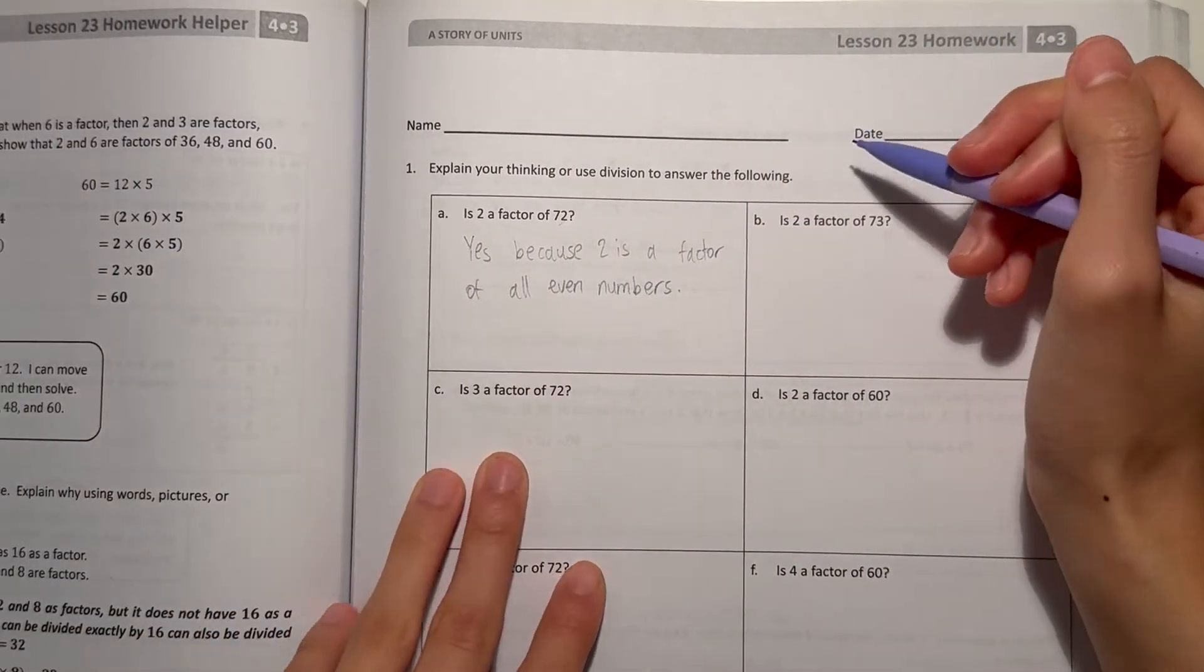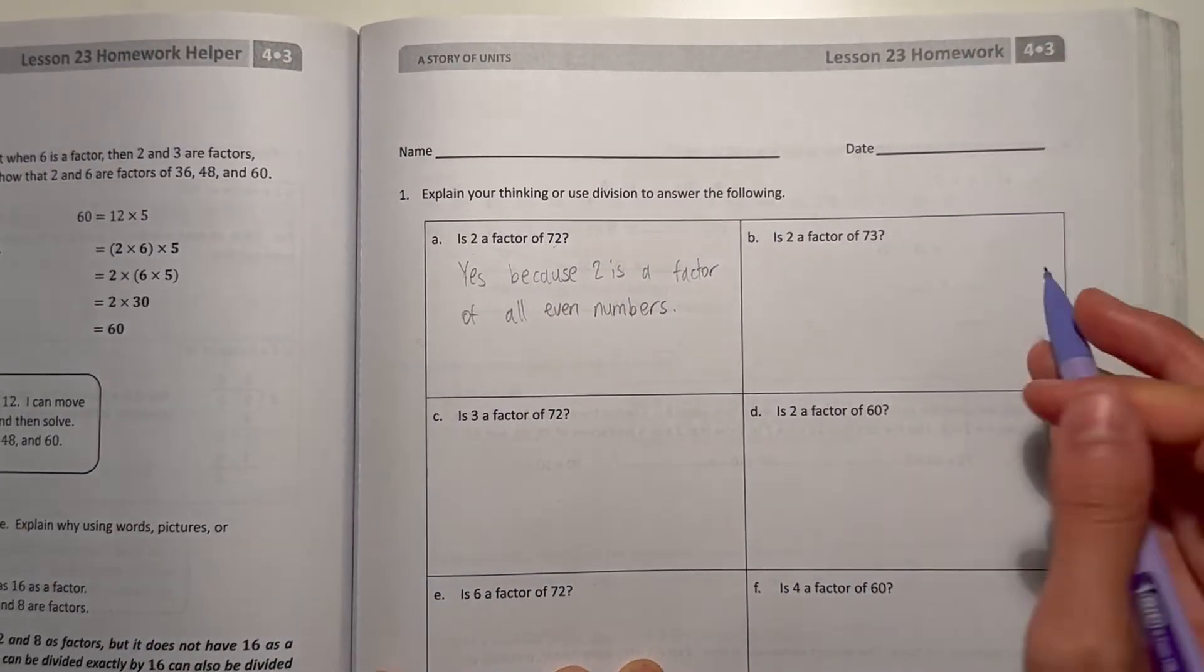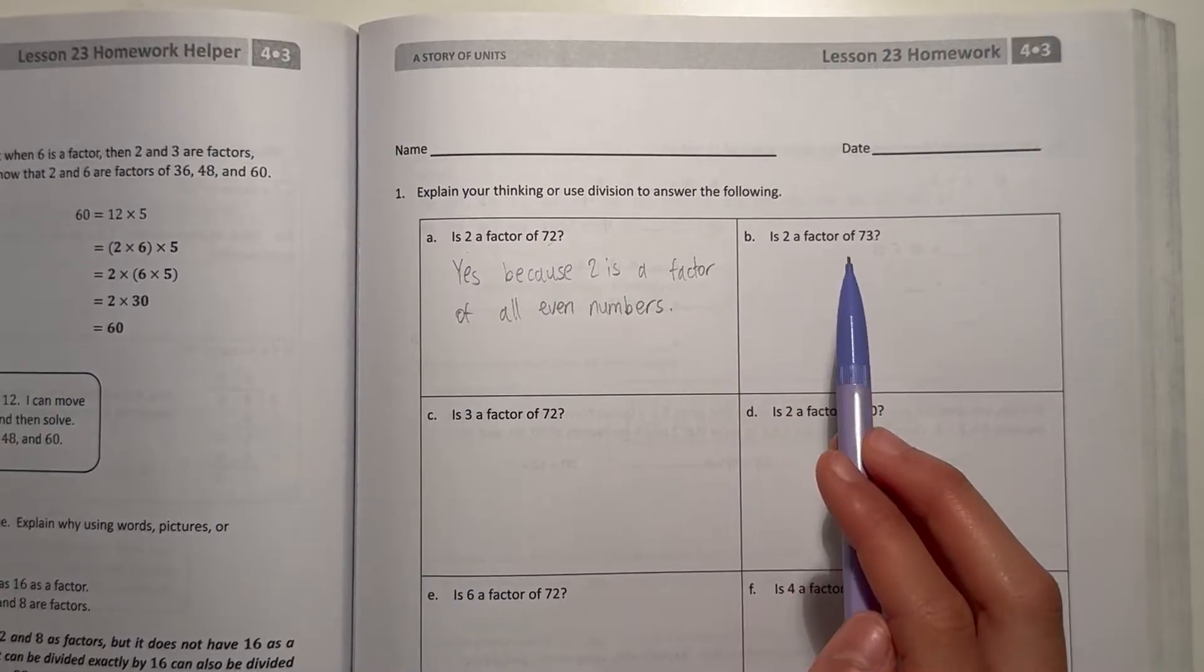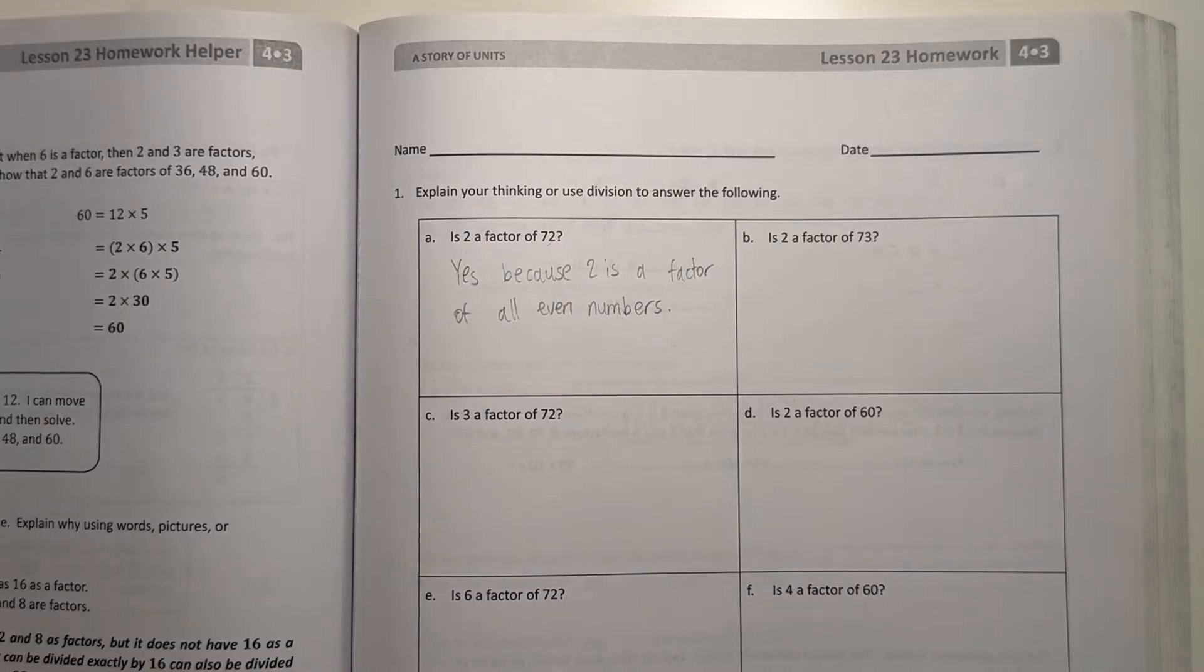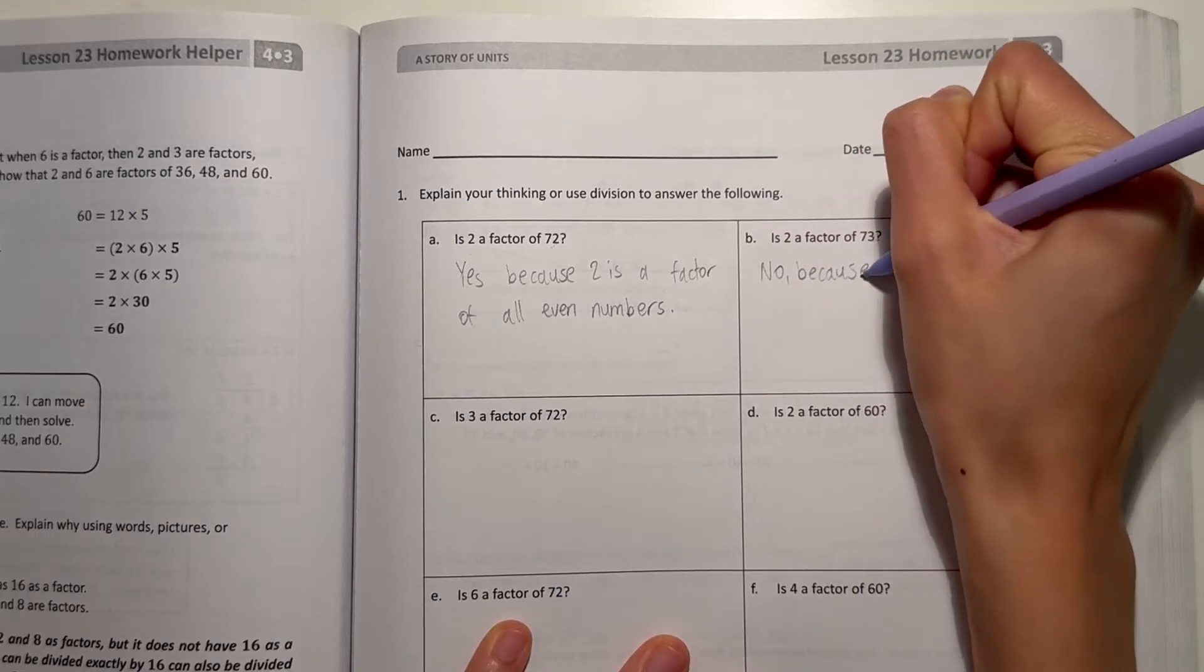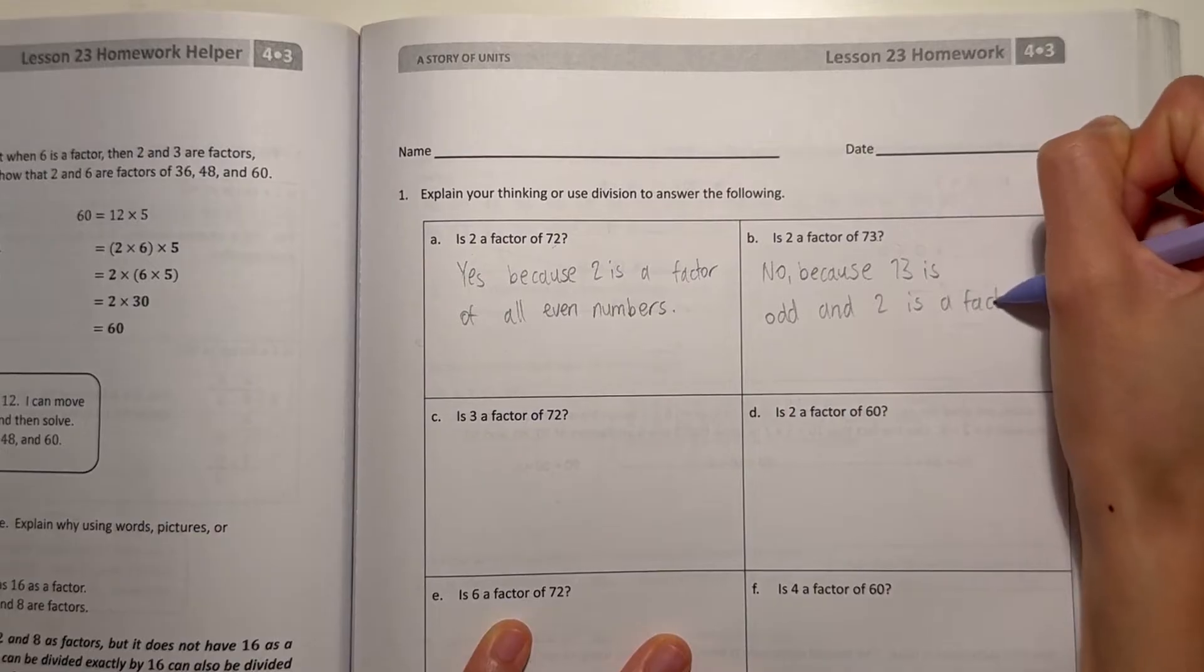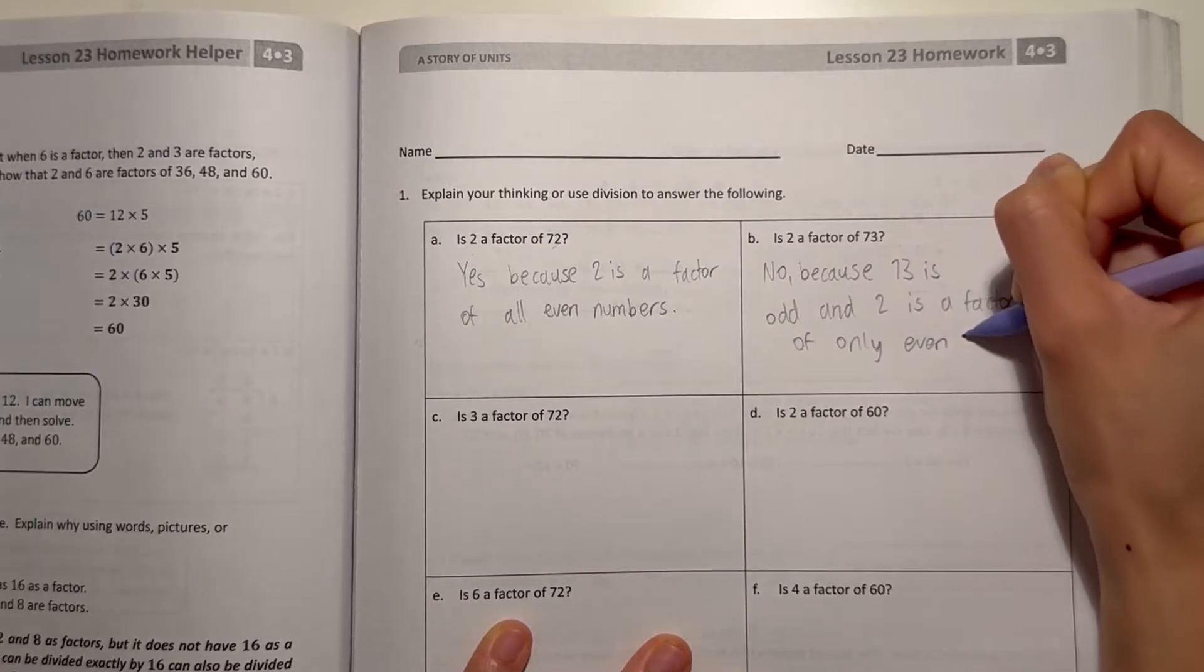B says, is 2 a factor of 73? So 73, let's look at the ones digit. Notice how it's a 3. That means this number 73 is not even. So since it's not even, 2 is not a factor because 2 will only be a factor of even numbers. So no, because 73 is odd, and 2 is a factor of only even numbers.